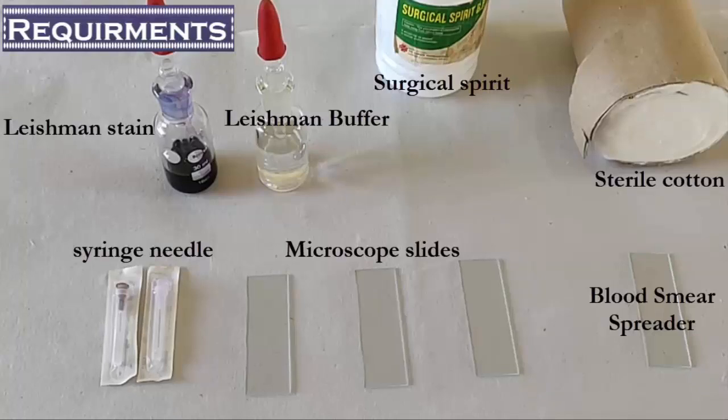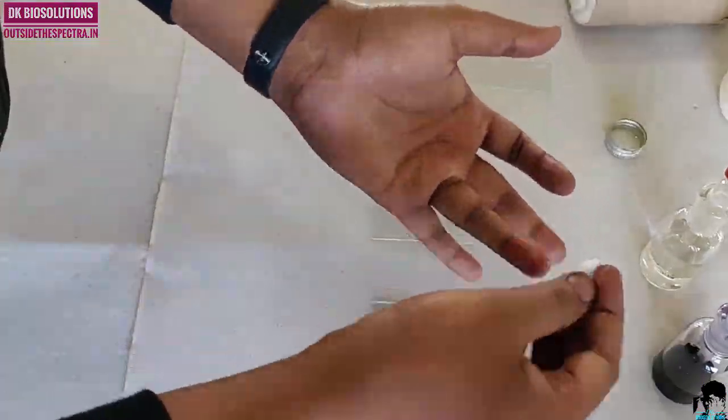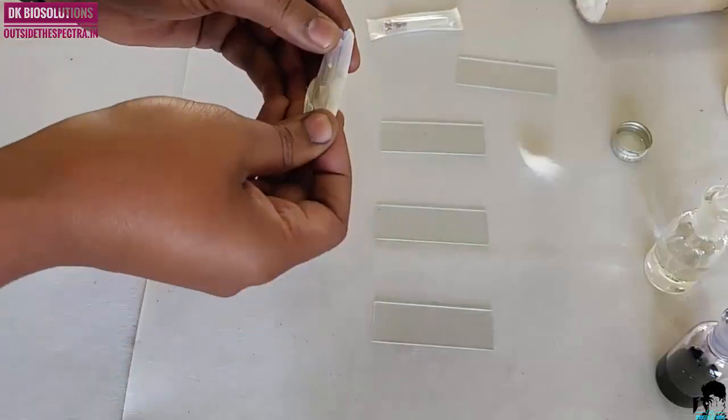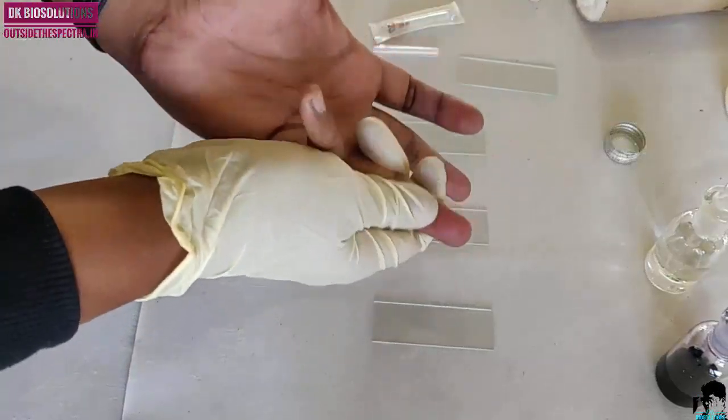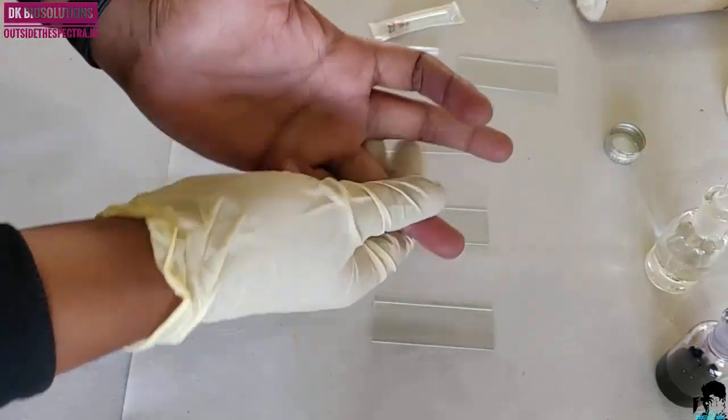Now, we will start with our blood film preparation. Sterilize your fingertip with rectified spirit and prick it with needle.